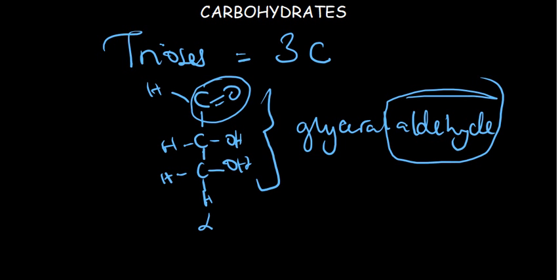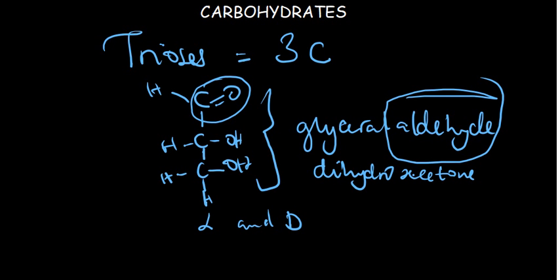We have L-glyceraldehyde and D-glyceraldehyde, and we also have dihydroxyacetone. These three are the types of trioses we have. They can easily be broken down to give energy during tissue respiration and glycolysis. Glucose is broken down into glyceraldehyde and dihydroxyacetone, and in the process lactic acid and pyruvate are produced from the metabolism of these trioses.